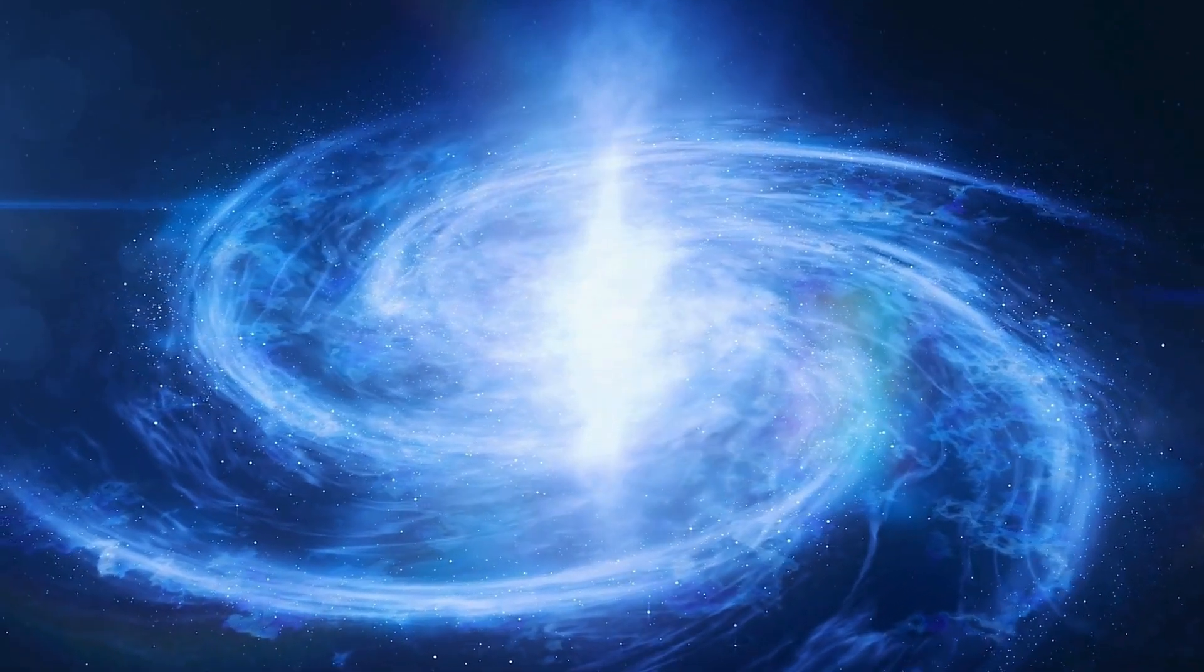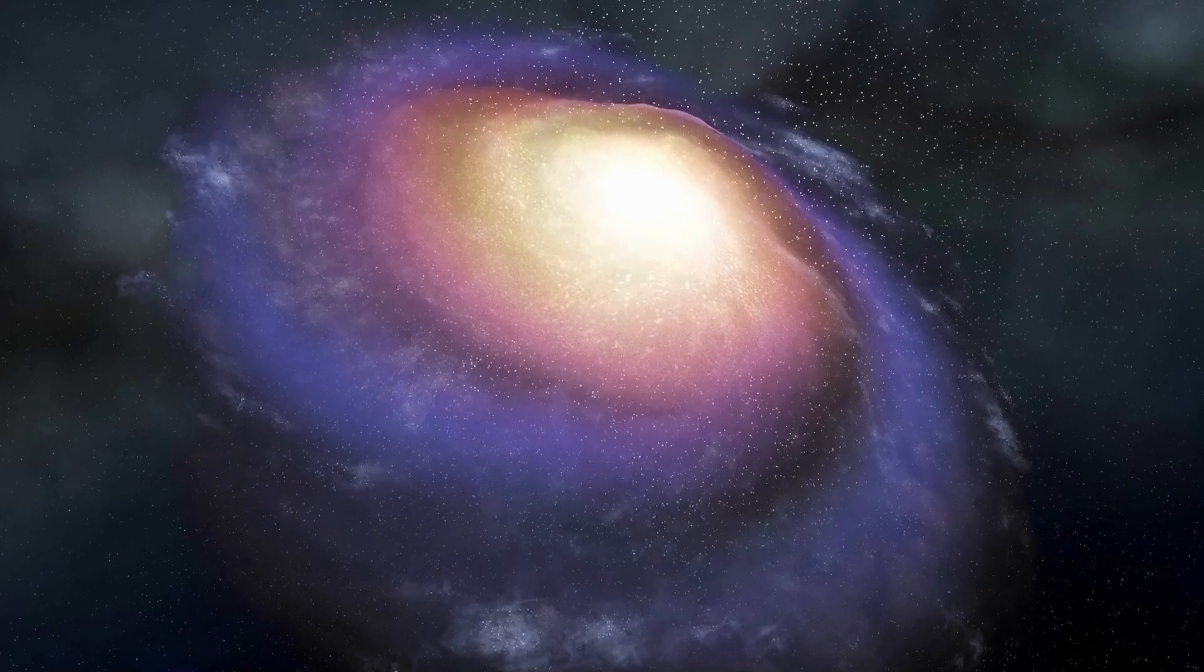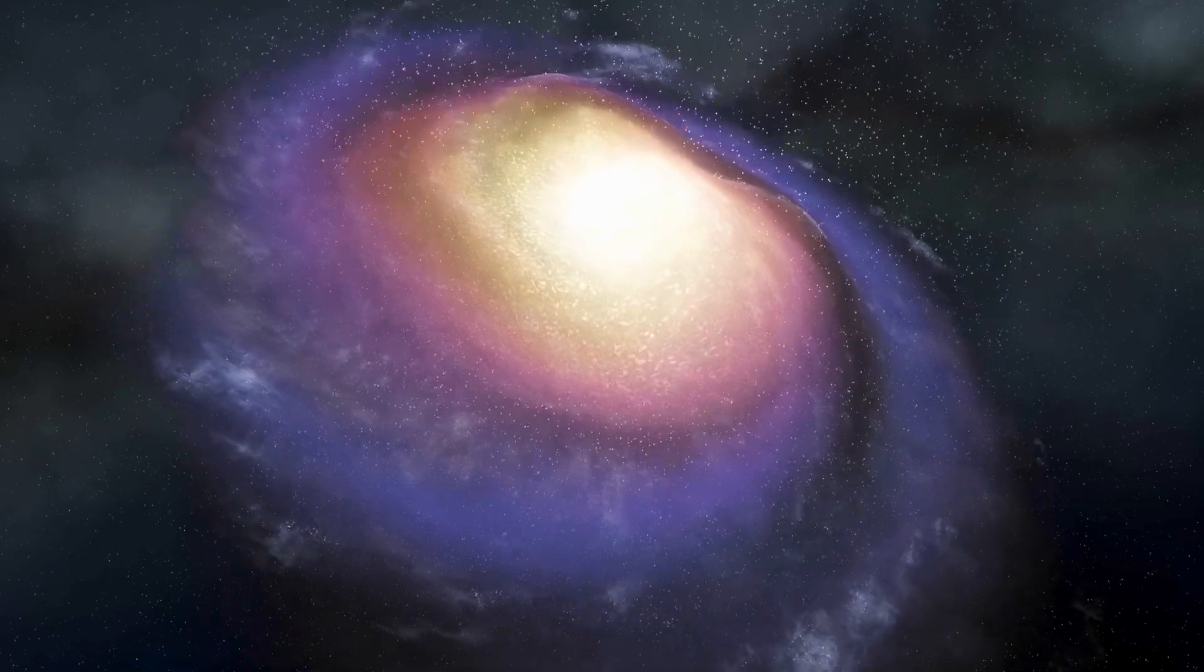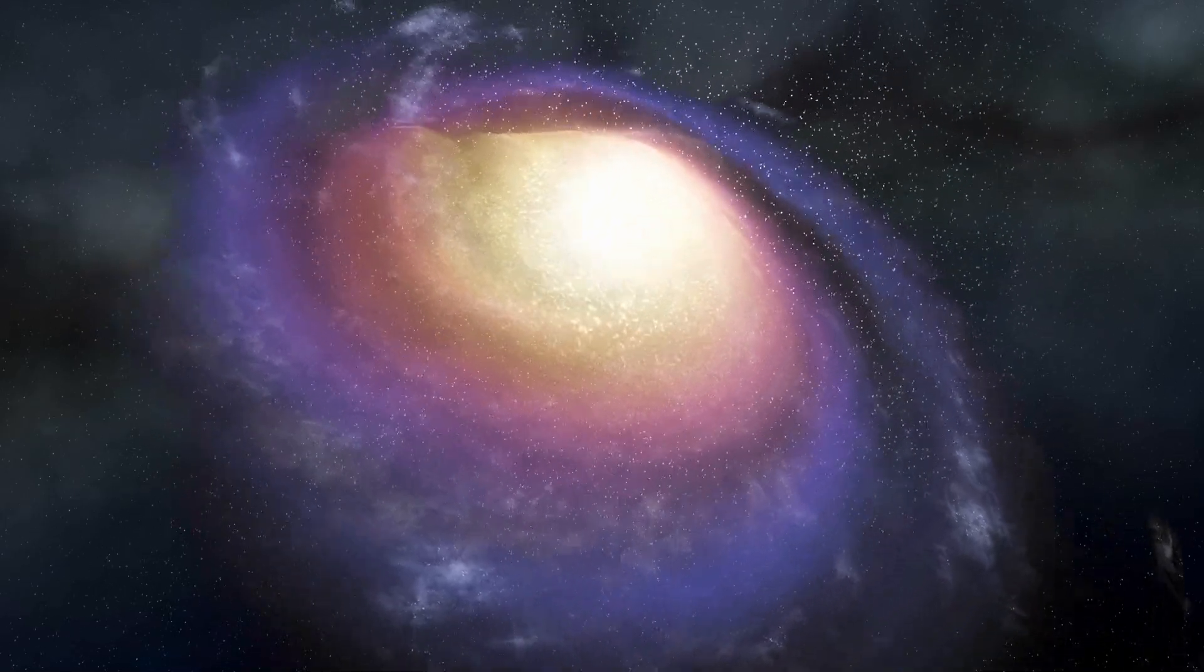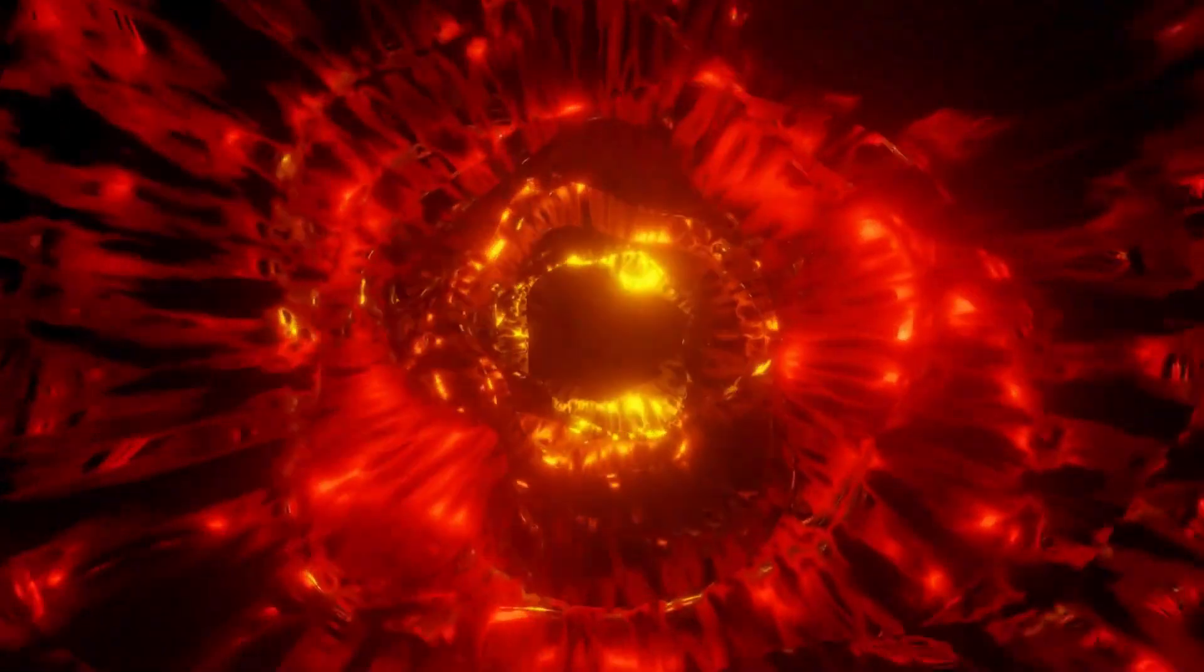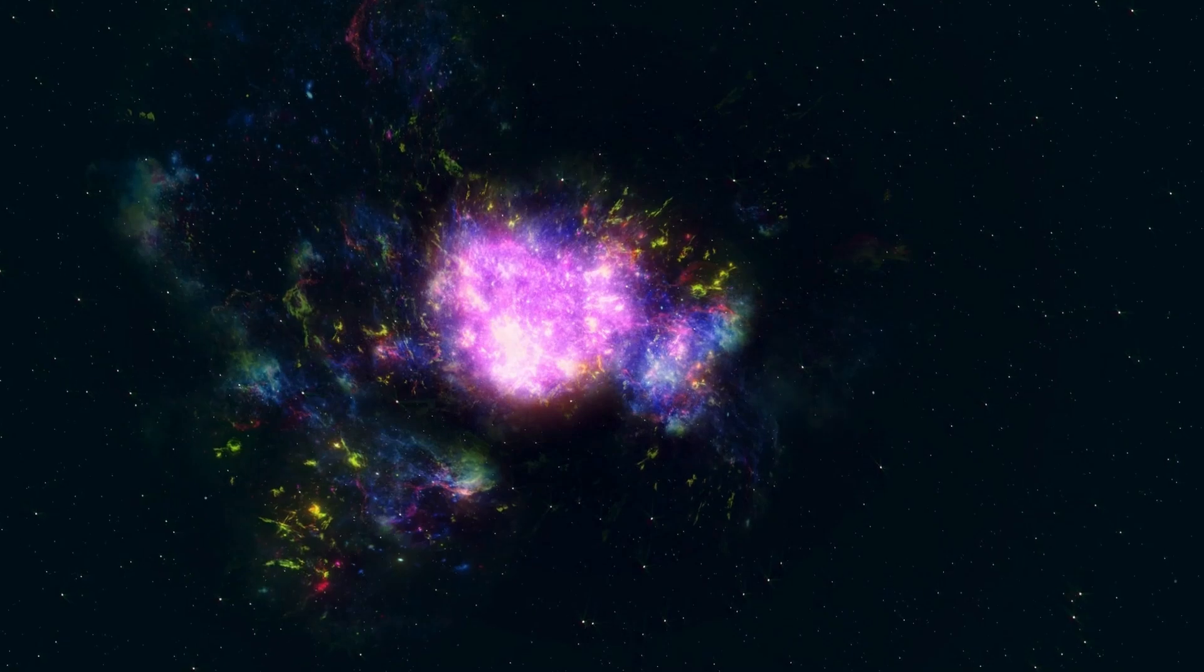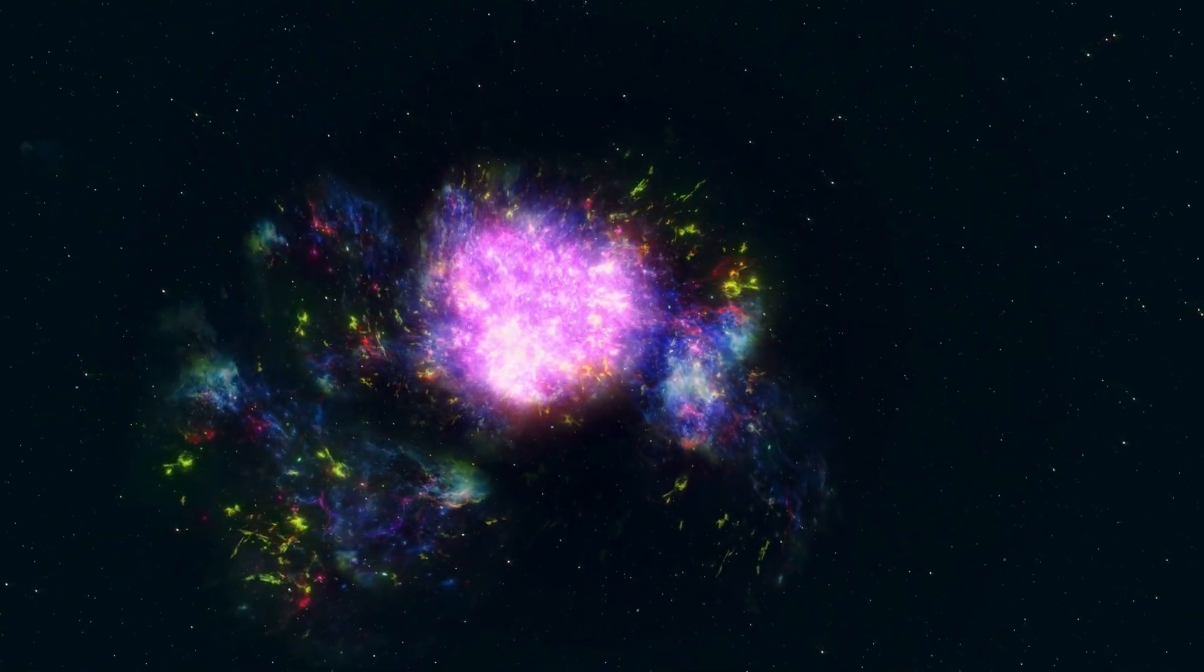This phenomenon bears similarities to coronal mass ejections observed on the sun. To better comprehend SME, imagine a volcanic eruption on a scale matching that of a star. Material from the star's interior surges upward and outward, causing shock waves within its atmosphere. Over time, this material forms molecules and dust, partially obstructing our view of the star and causing it to appear dimmer.